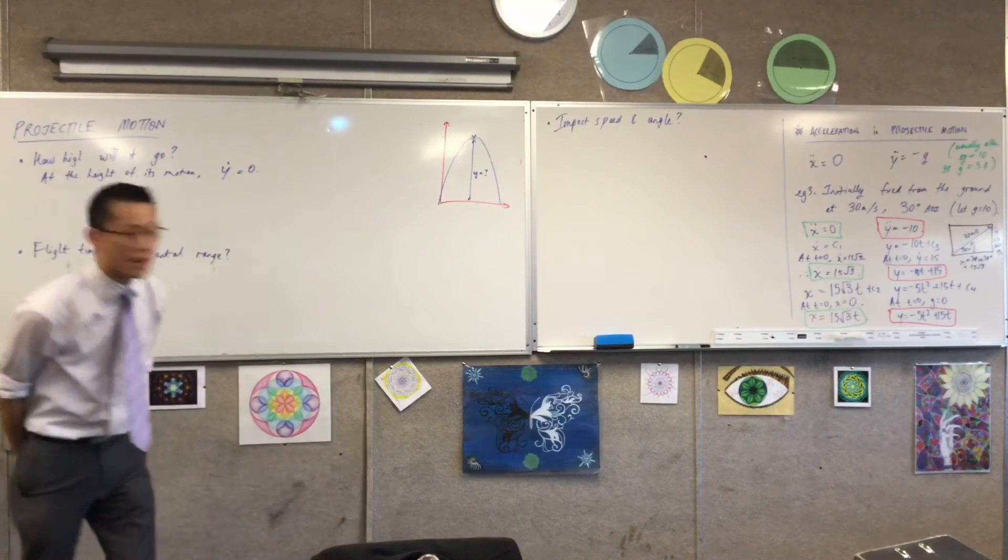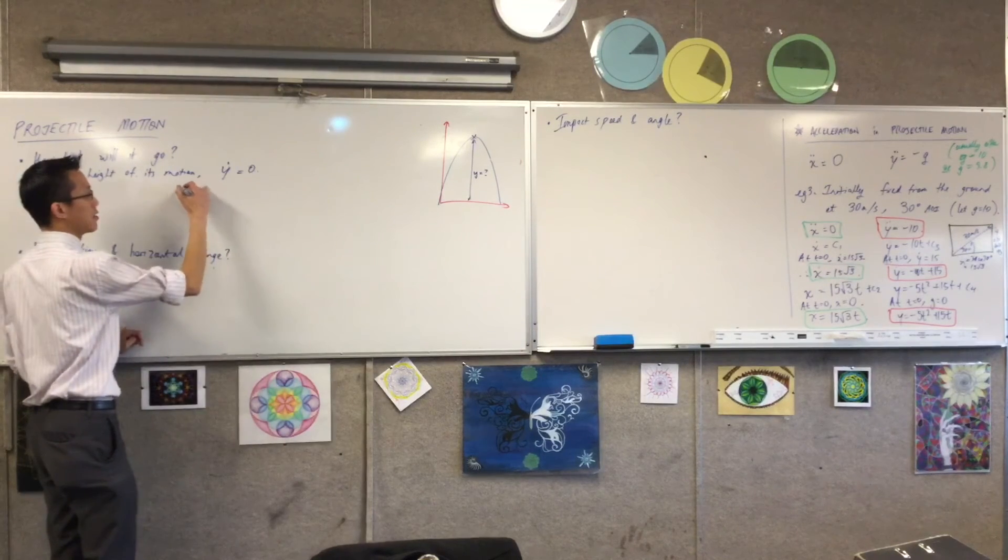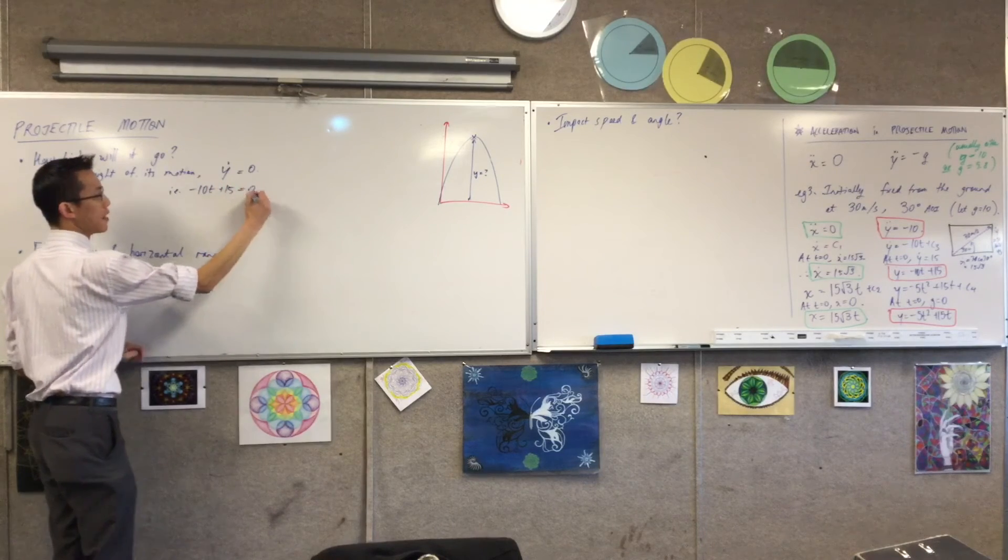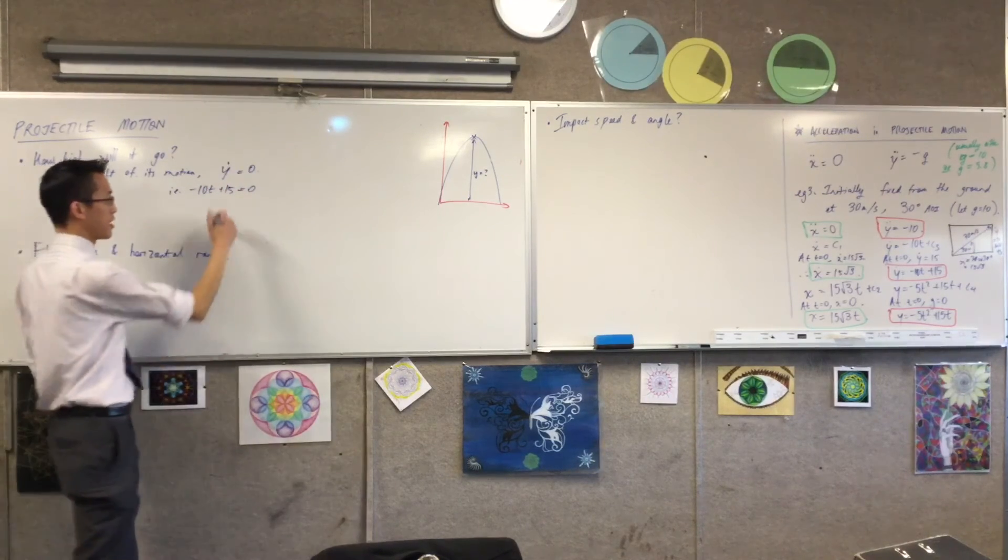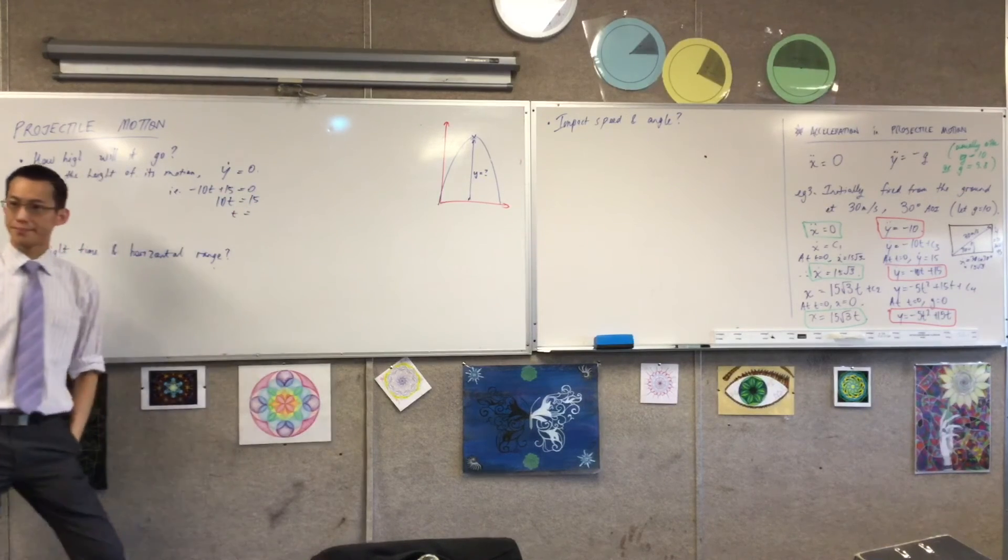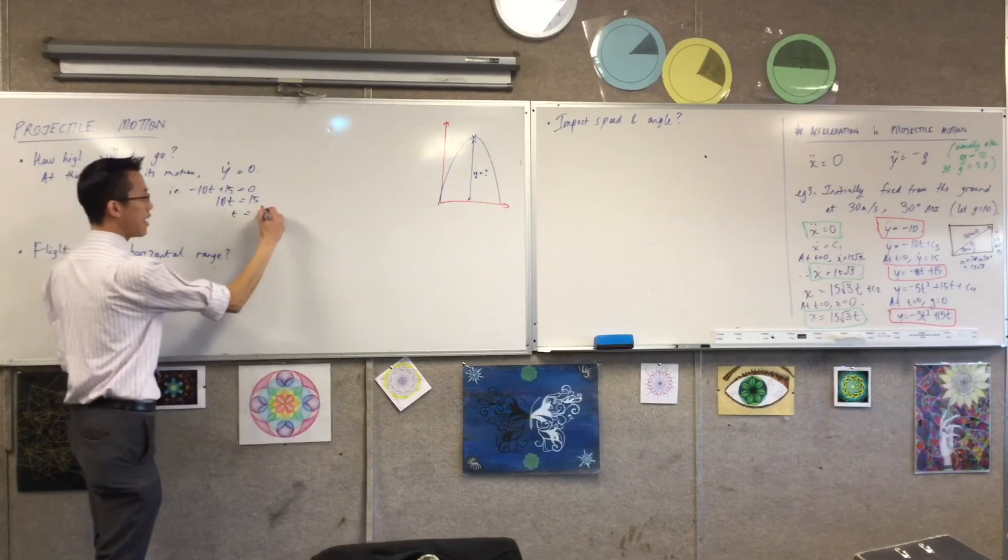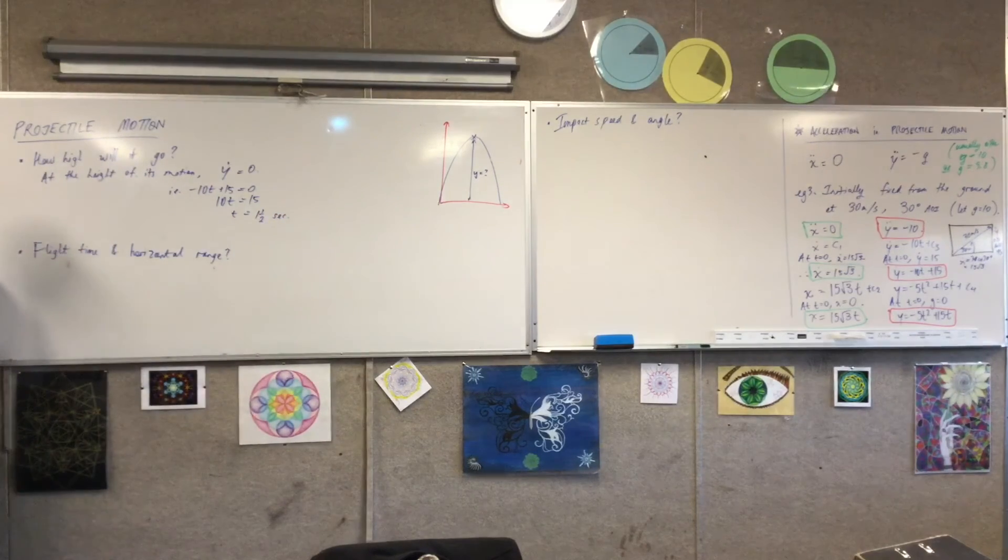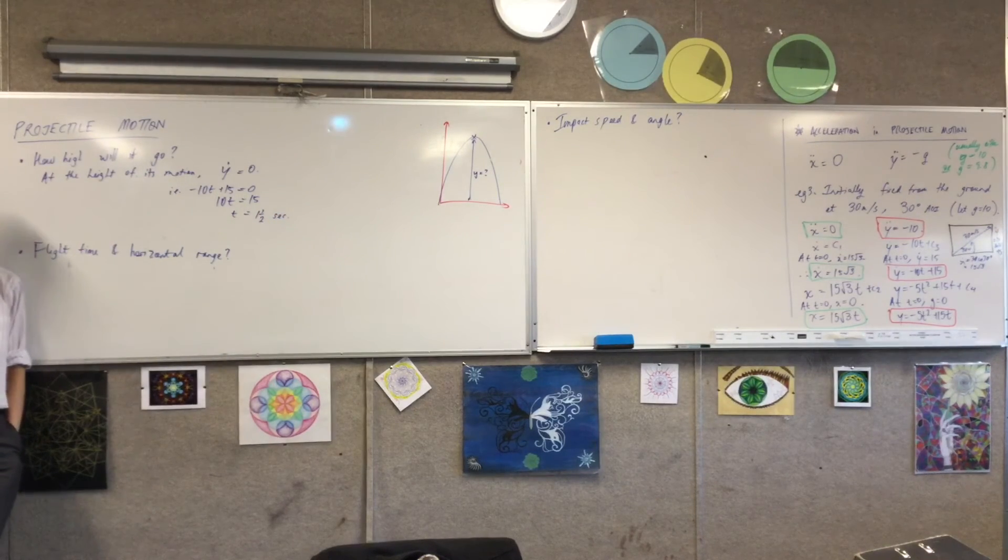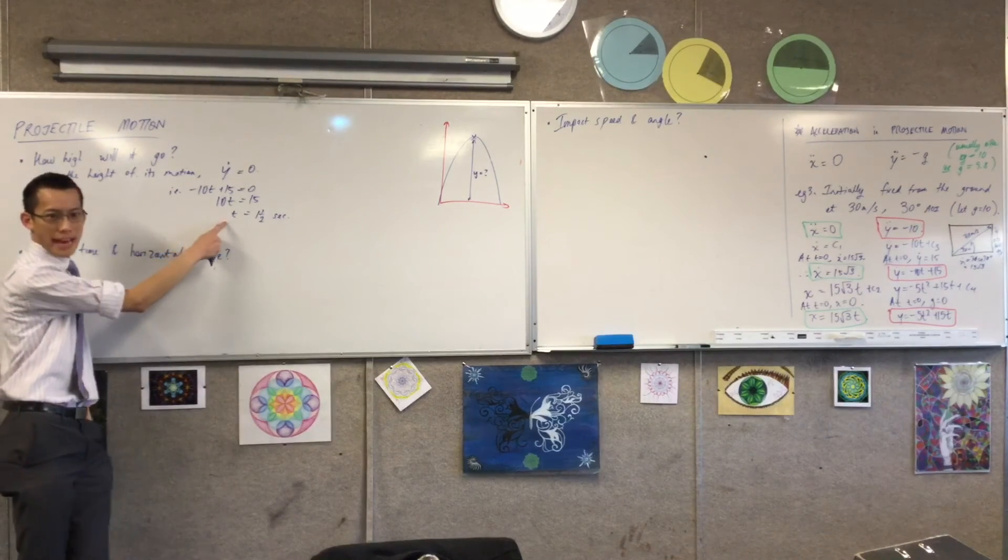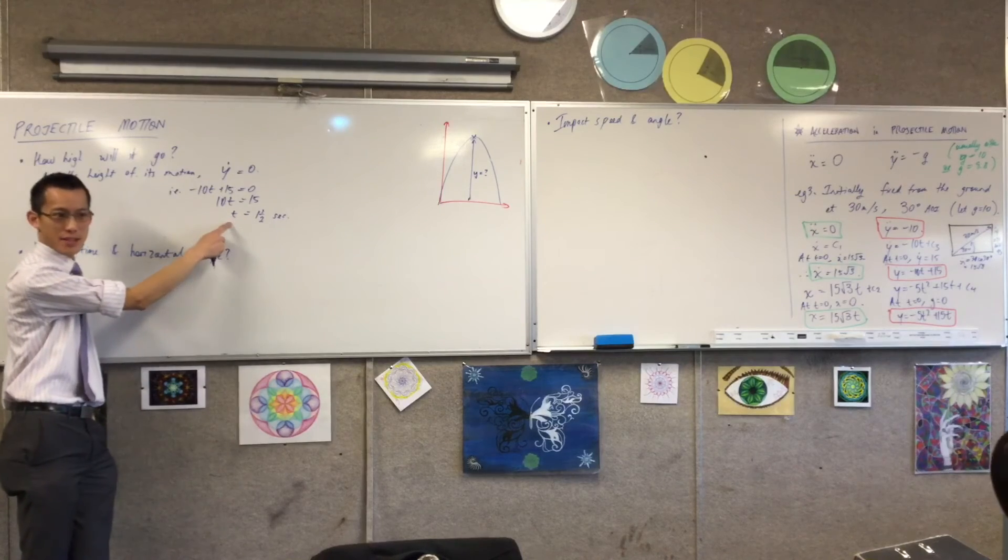What am I going to get here? This is minus 10t plus 15, right? So it just takes a little bit of rearrangement. What's it equal to? Yeah, one and a half seconds, okay? Now, this has not told me the answer to the question, how high will it go? This has told me when that happens, right?